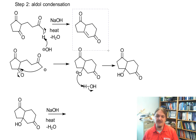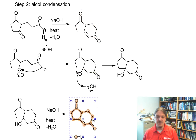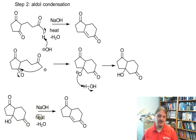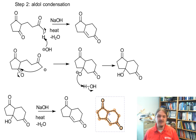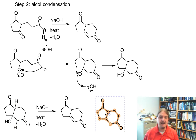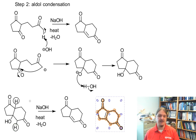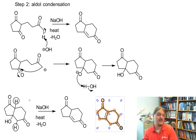Even though I have this product drawn, there are actually two positions that are acidic enough to be deprotonated — two alpha spots to the carbonyl — so there's another possible product. Both this hydrogen and this hydrogen that I've drawn in are acidic enough to be deprotonated. I'm not going to show the mechanism for this last elimination step because I'm out of room; you can go back and watch my video on the aldol condensation to see how this happens.